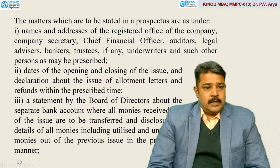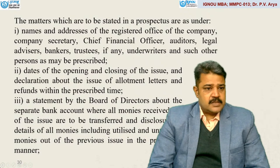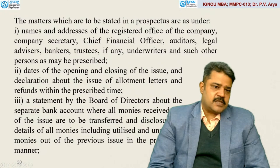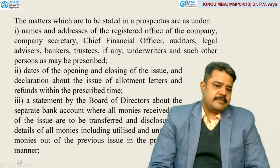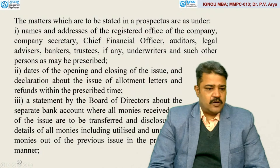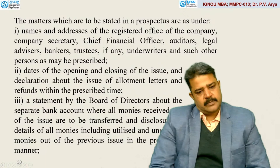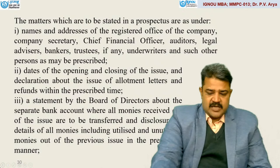The prospectus must include: name and address of the company, company secretary, chief financial officer, auditors, legal advisors, bankers, trustees if any, underwriters and such other persons as may be prescribed. Dates of opening and closing of issue and declaration about the issue of allotment letters within the prescribed time. A statement by the board of directors about a separate bank account where all monies received out of the issue are to be transferred, and disclosure of details of all monies including utilized and unutilized monies out of the previous issue.